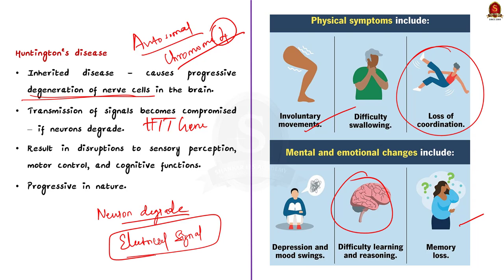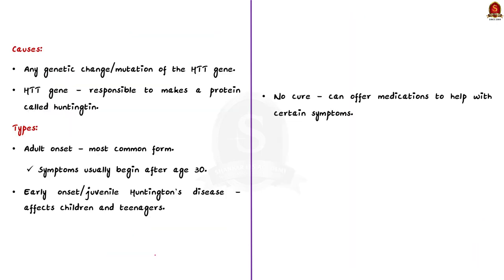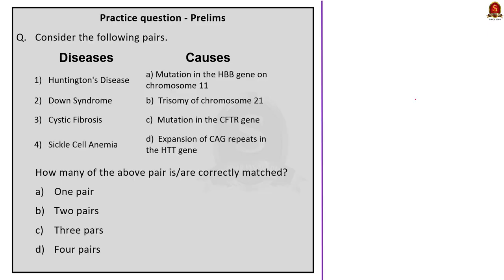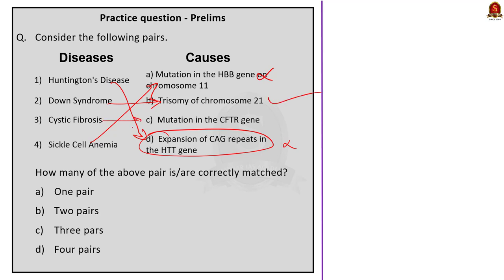In the MCQ, consider the following pairs: Huntington's disease — caused by expansion of CAG repeats in the HTT gene; sickle cell anemia — caused by mutation in the HBB gene on chromosome 11; Down syndrome — caused by trisomy of chromosome 21 (correct); cystic fibrosis — caused by mutation in the CFTR gene. Here, the first and fourth pairs are correct — wait, actually the first pair is noted as incorrect in context, and Down syndrome and cystic fibrosis pairs are identified as correct. So the answer is option B, two pairs.